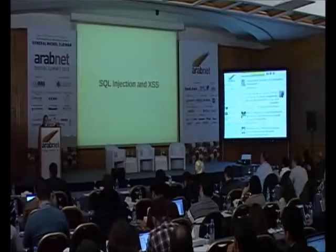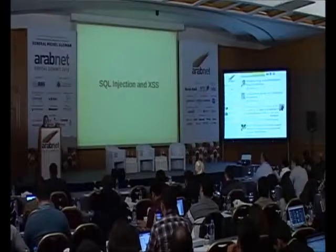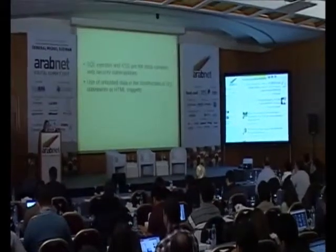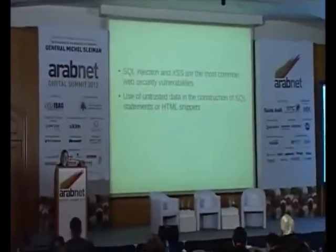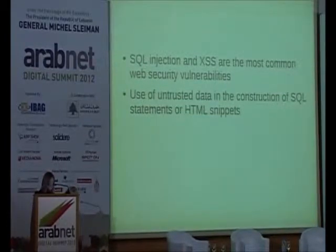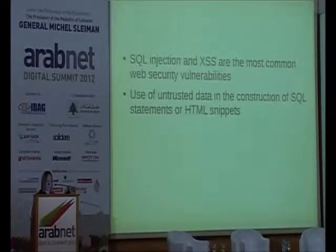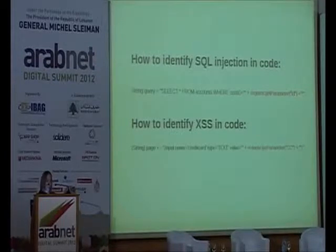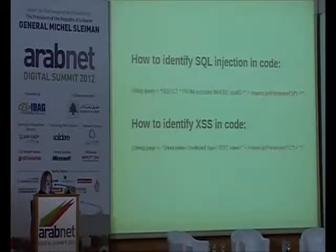The top two on the OWASP list are always SQL Injection and XSS. These are the most common web security vulnerabilities. Basically, it's the use of untrusted data in the construction of SQL statements and HTML snippets. Any application that takes user input — just because your application expects a number doesn't mean that's what the user is going to put in.